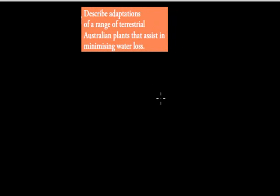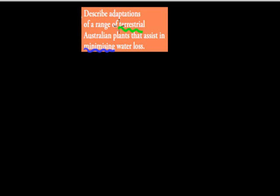Welcome back. In the last video we talked about how Australian plants and trees have adaptations to help them cope with high salt levels. In this video we're going to cover a new syllabus dot point: describe adaptations of a range of terrestrial Australian plants that assist in minimizing water loss. Terrestrial just means land, so we're looking at Australian land plants that assist in reducing water loss.